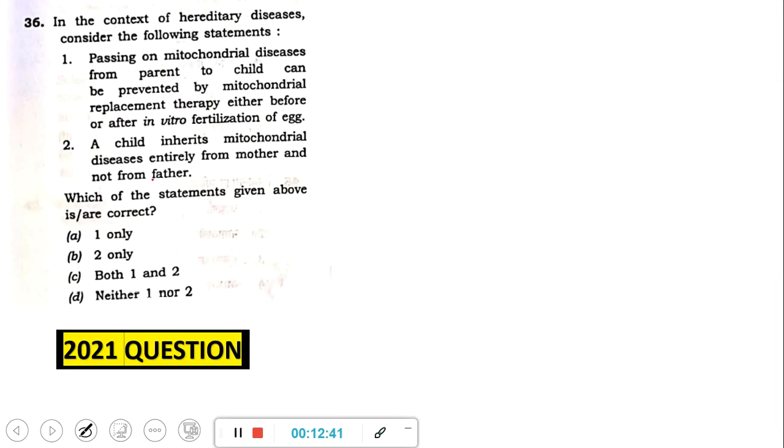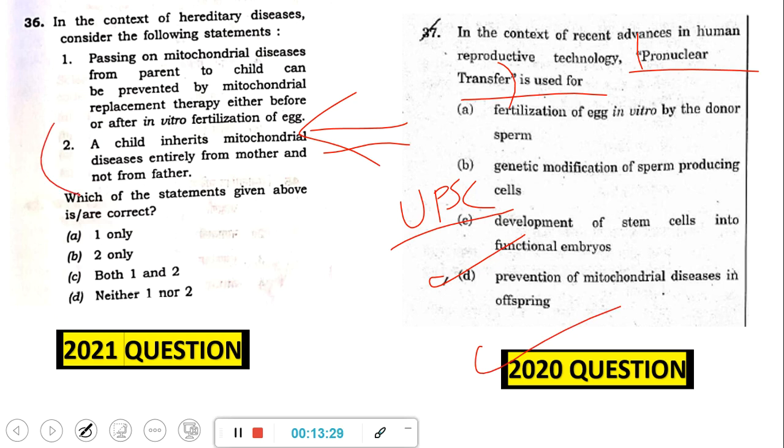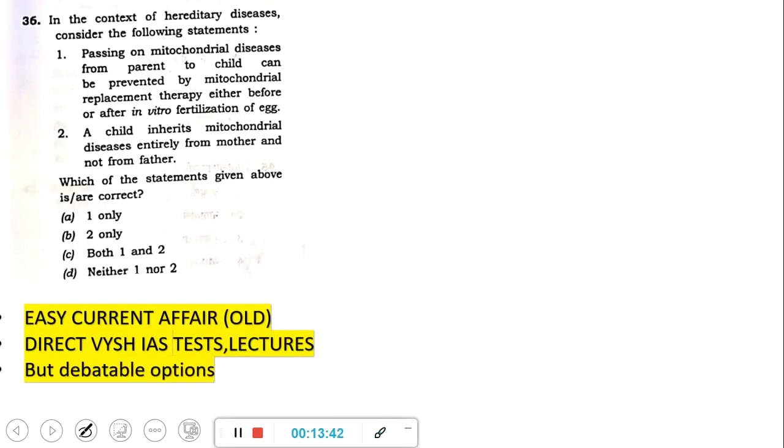Now this one is the debatable question. In context of hereditary disease, consider the following statements. It's a little technical. Before showing you this, I'll show you in 2020 the same topic was asked. 2020 question was in the context of recent advances in human reproductive technology, pro-nuclear transfer is used for - meaning they just ask you the context. This is the usual UPSC standard in context. That is what an IAS IPS person should know. They should not know like how exactly this pro-nuclear transfer is done, the full step-by-step you need not know. But in 2021, they are expecting you to know the step-by-step process. Answer here is prevention of mitochondrial diseases in offspring. So it was a current affair thing. It is there in our test also.